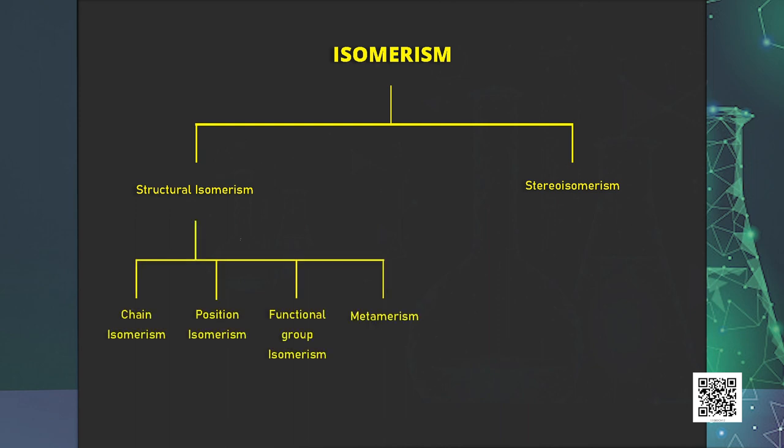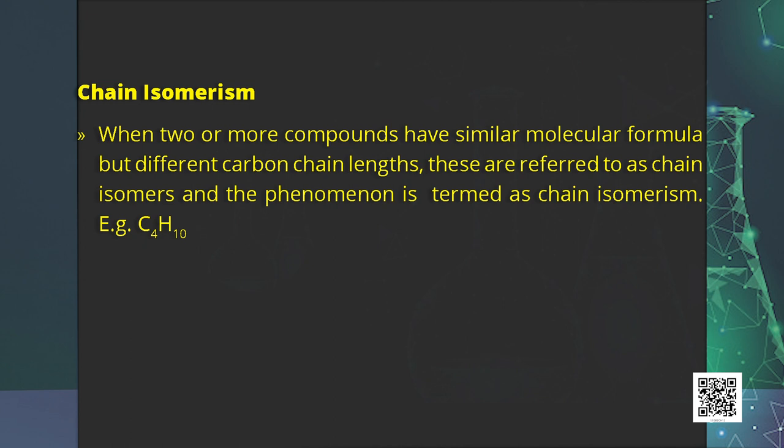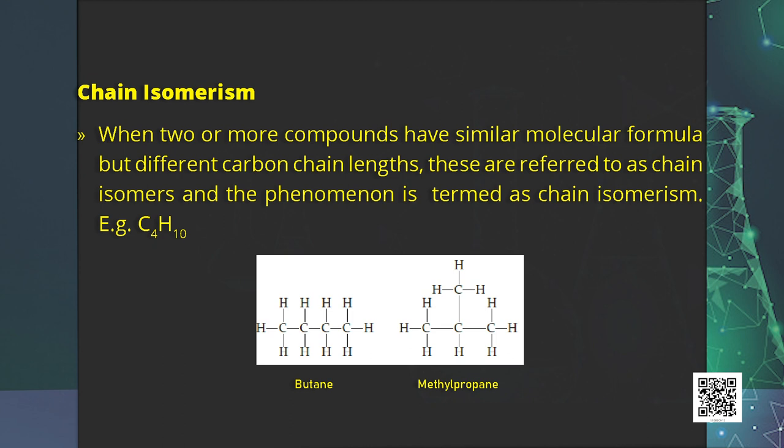Some typical examples of structural isomerism are chain isomerism, position isomerism, functional group isomerism, and metamerism. In chain isomerism, two or more compounds have the same molecular formula but different carbon chain lengths. For example, butane and 2-methylpropane are chain isomers. Their physical properties differ: the boiling point of butane is 273 K while that of 2-methylpropane is 261 K.